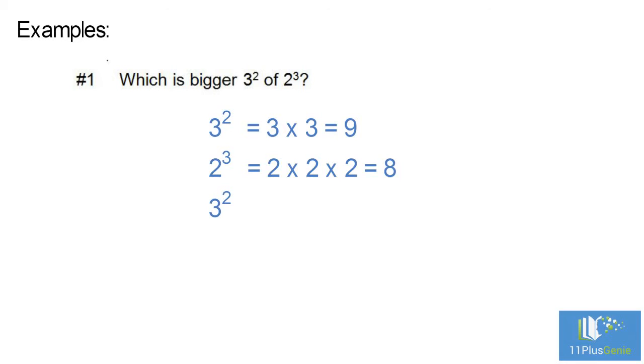Examples. Number 1: Which is bigger, 3 squared or 2 cubed? 3 squared equals 3 times 3 which equals 9, and 2 cubed equals 2 times 2 times 2 which equals 8. So 3 squared is bigger than 2 cubed.